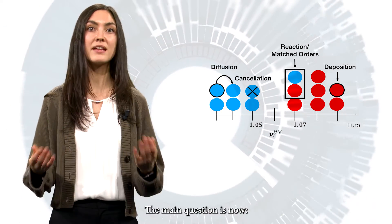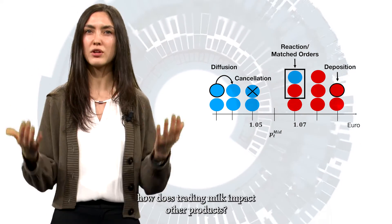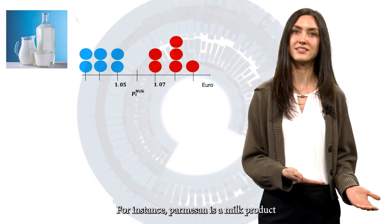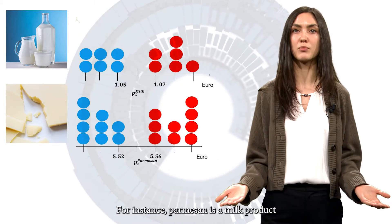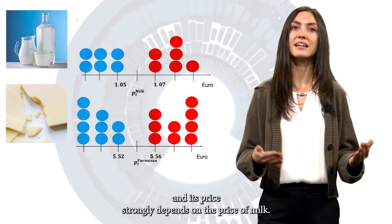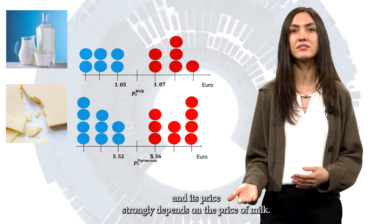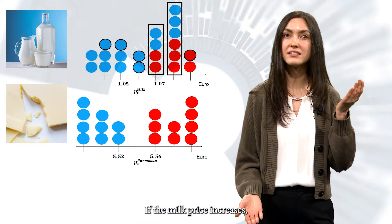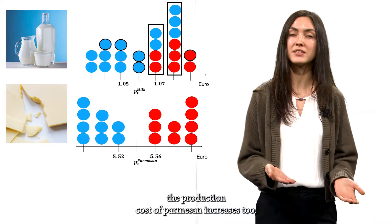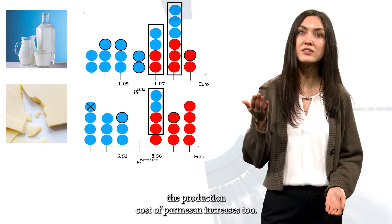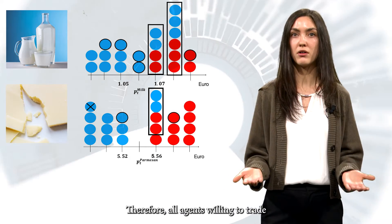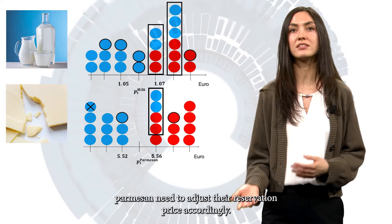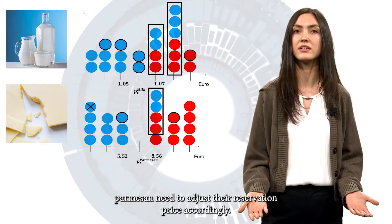The main question is now: how does trading milk impact other products? For instance, Parmesan is a milk product and its price strongly depends on the price of milk. If the milk price increases, the production costs of Parmesan increase too. Therefore, all agents willing to trade Parmesan need to adjust their reservation price accordingly.